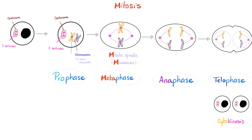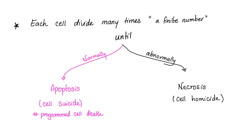Here is everything in one slide — pause and review. What's the end result of cell division through mitosis? There is a finite number of divisions, not infinite — normally until apoptosis, a programmed cell death known as cell suicide. But abnormally, if you have been hit with pathology like ischemia, for example, you get necrosis. This is cell homicide. Always evil.